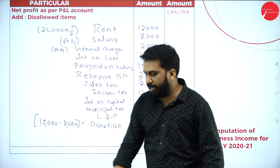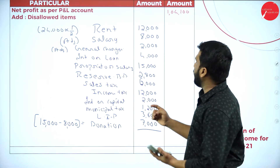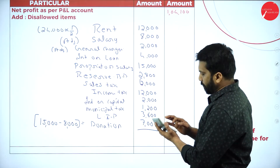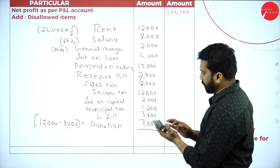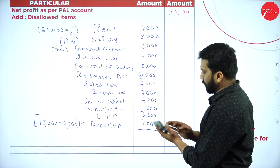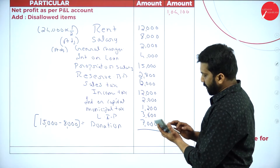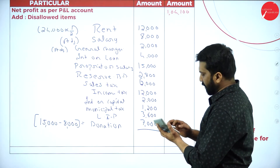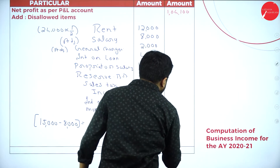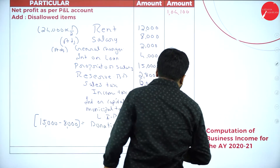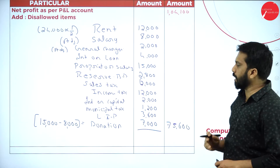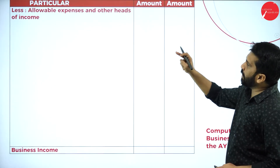Adding all the disallowed expenses: ₹12,000 + ₹8,000 + ₹2,000 + ₹4,000 + ₹15,000 + ₹2,800 + ₹6,000 + ₹12,000 + ₹2,000 + ₹1,200 + ₹3,600 + ₹7,000 = ₹75,600. So net profit plus disallowed items gives us one side. Now we go to less allowable expenses and other head income.